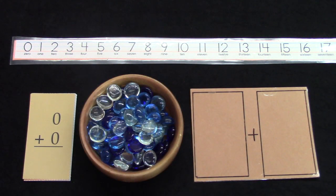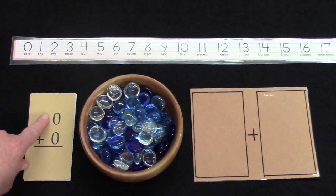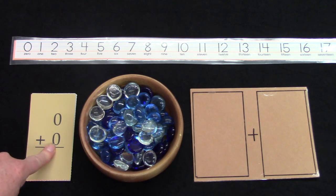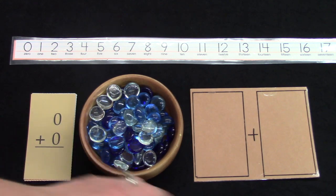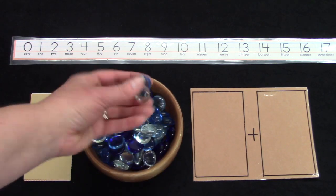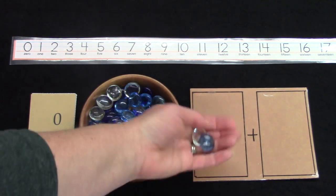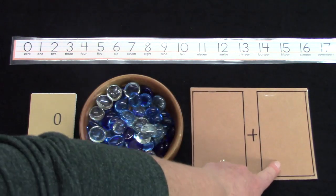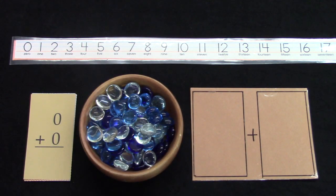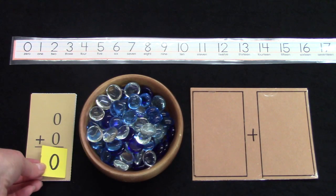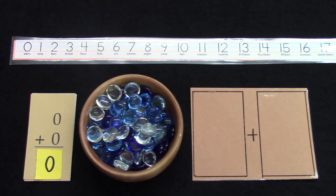Alright class, let's take a look at our plus zero facts. In this fact we have zero plus zero. And so if we were to put zero or no gems on this side and no gems on that side, our answer to zero plus zero would be zero.